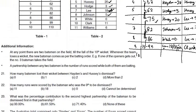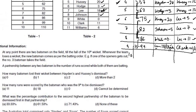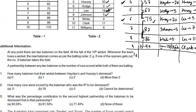The first question was: how many batsmen lost their wicket between Hayden's and Hussey's dismissal? Hayden was dismissed at the 4th wicket and Hussey at the 5th, meaning there was 1 person between both of them. So the answer is option B.